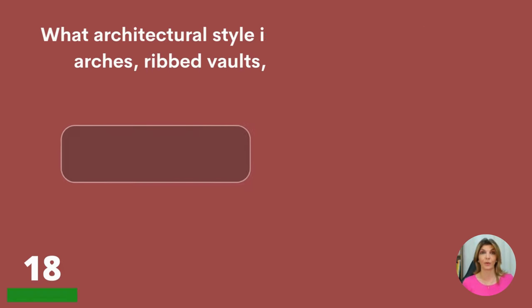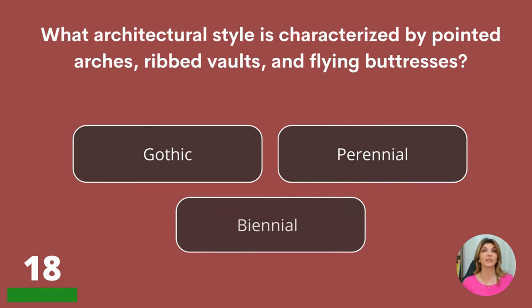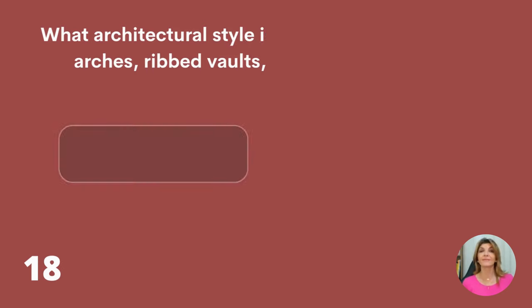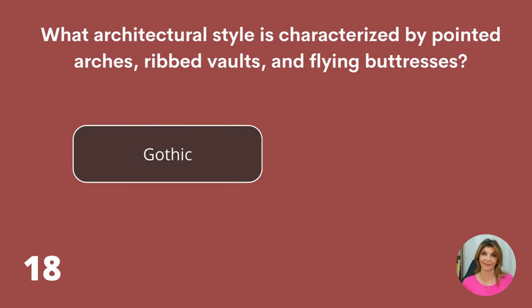What architectural style is characterized by pointed arches, ribbed vaults, and flying buttresses? Gothic, perennial, or biennial? Gothic.